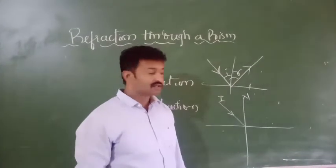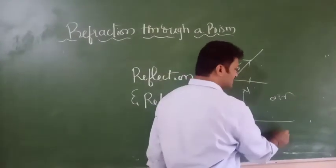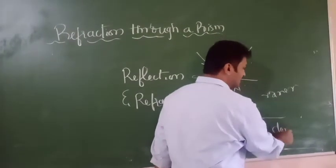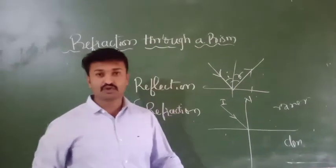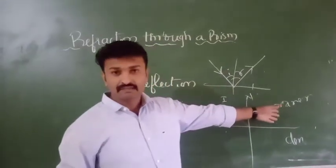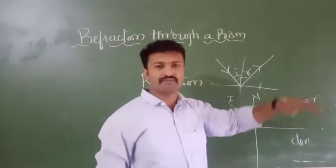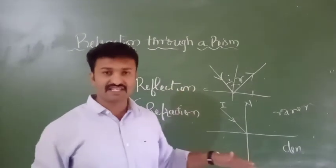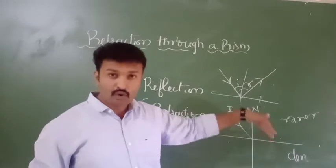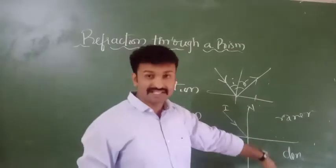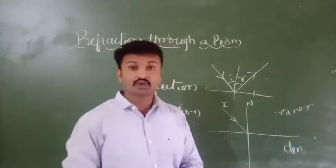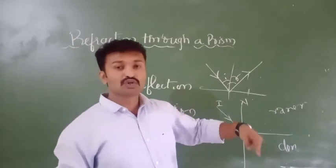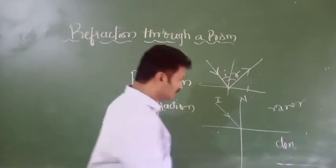When a ray of light travels from a rarer medium — for example, air, where particles are free in nature — to a denser medium, where particles are fused together, what happens to the refracted ray? Going from rarer to denser, it moves towards the normal.